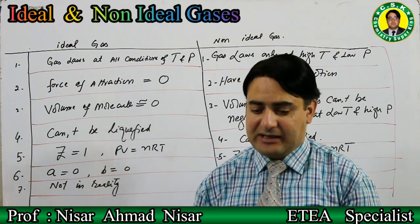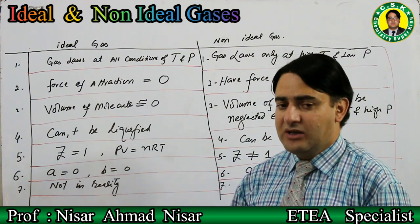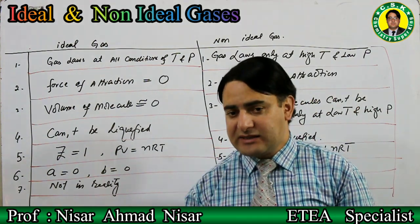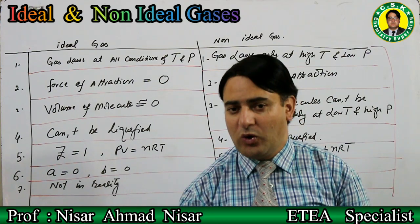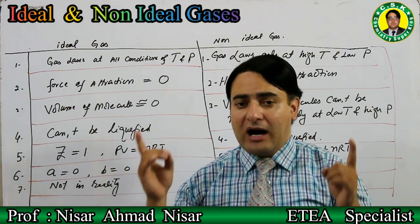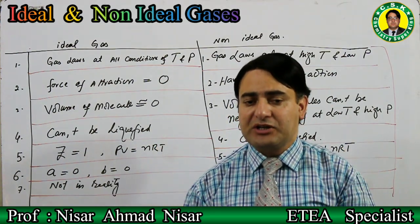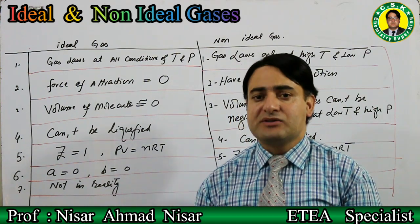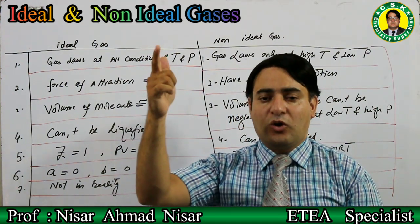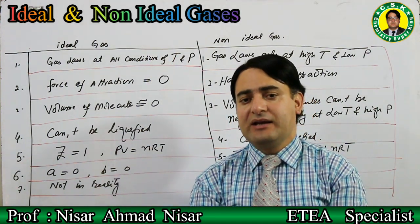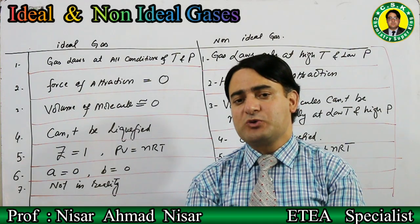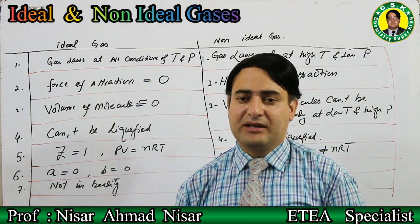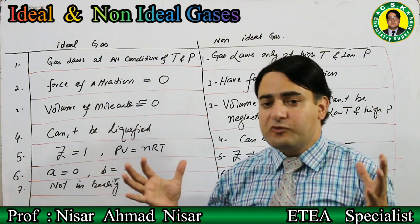A gas that obeys the ideal gas equation at all conditions of temperature and pressure is called an ideal gas. A gas that does not obey the ideal gas equation at all temperature and pressure conditions — particularly at high pressure and low temperature — is called a non-ideal gas or real gas. That is the first difference.